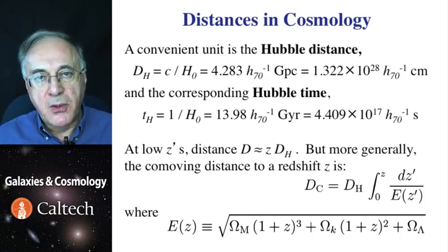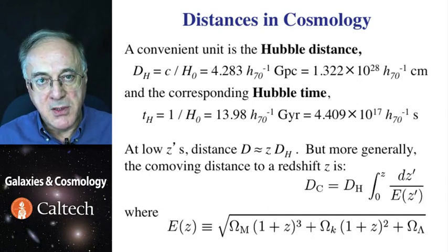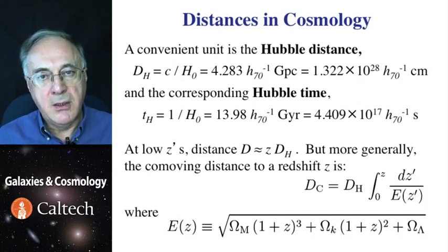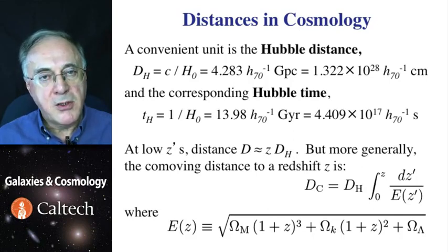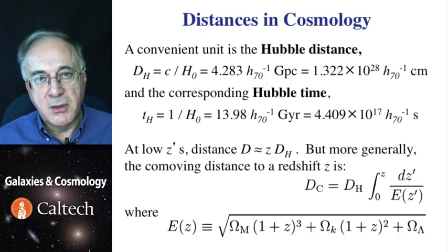Generally speaking, we can compute the co-moving distance, distance in coordinates that do expand with the expanding space, as follows. We can integrate the element of redshift divided by the function, which is really Hubble constant at that given time, and which is given here. You may actually remember a similar expression inside the Friedman equation. You see three terms. The density of matter multiplied by the cube of 1 plus redshift. Well, that's probably because the density of the matter scales as the cube of the expansion.